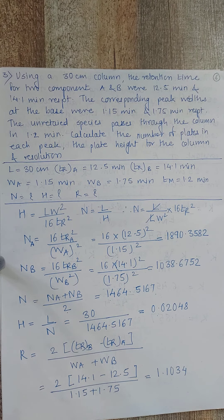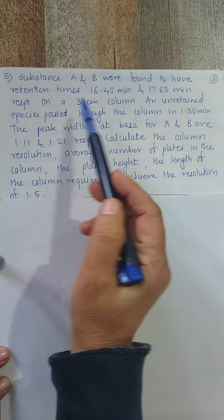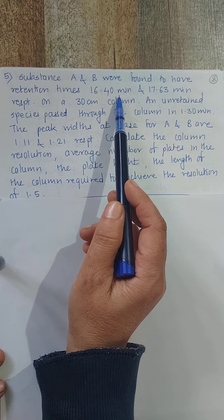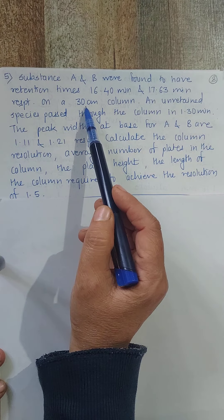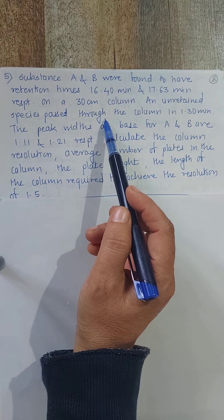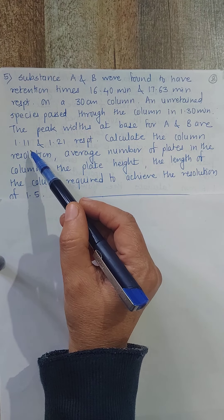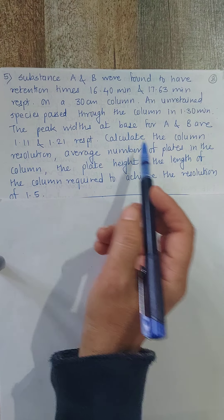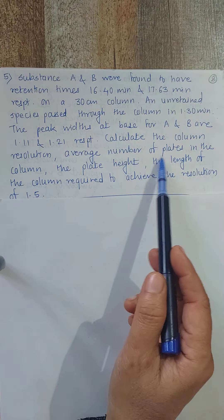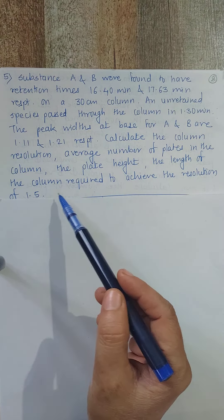Fifth problem: Substances A and B have retention times of 16.40 minutes and 17.63 minutes respectively on a 30 cm column. An unretained species passes through the column in 1.30 minutes. Peak widths at the base for A and B are 1.11 and 1.21 respectively. Calculate the column resolution R, average number of plates N, plate height H, and the column length required to achieve a resolution of 1.5.